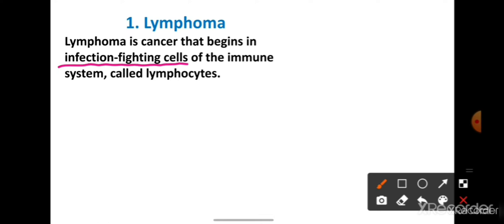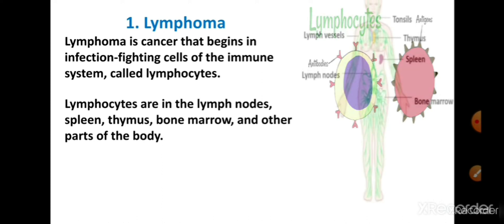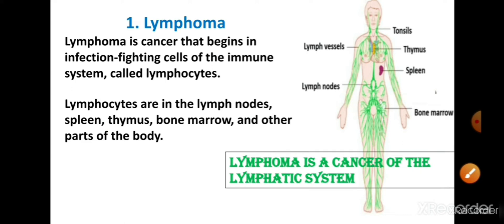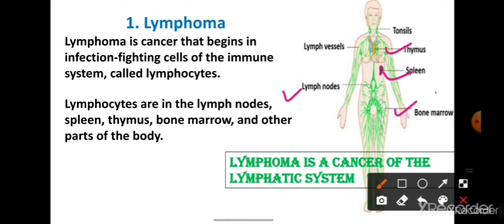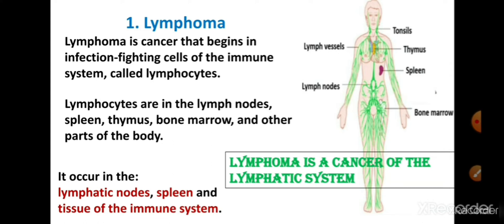The immune system's most important infection-fighting cells are lymphocytes, also called WBCs. These lymphocytes are found in the lymph nodes, spleen, thymus, bone marrow and other parts of the body. So lymphoma is a cancer of the lymphocytes and of the lymphatic system, and it can also affect other organs of the body.